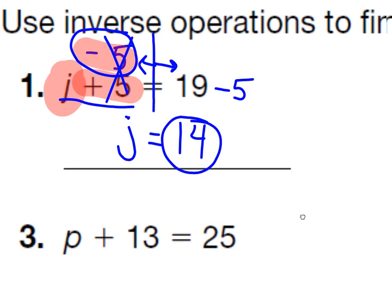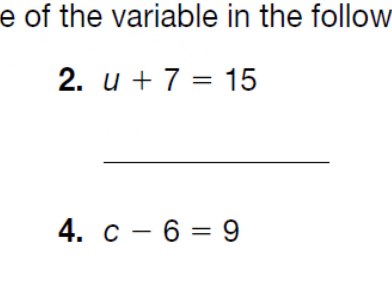So let me do number 2 with you. Number 2, our variable is U. We're solving for U. So U plus 7 equals 15. We need to figure out what U equals. And in order to do that, we've got to make it so that the U or the variable is the only thing on the left side of the equal sign. And how do we do that? We do that using the inverse operation. So what is the inverse or the opposite of plus 7? It would be take away 7.